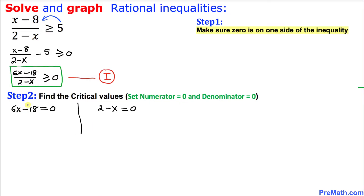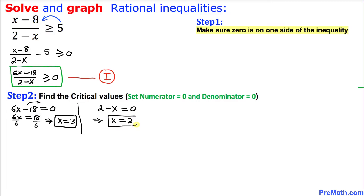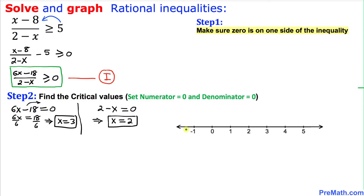Solving the numerator: move negative 18 to the other side to get 6x equals 18, then divide both sides by 6 to get x equals 3. On the denominator side, 2 minus x equals 0 gives us x equals 2. So our two critical values are x equals 3 and x equals 2.